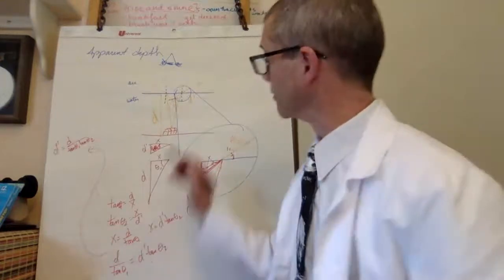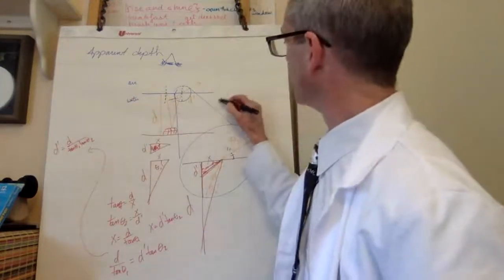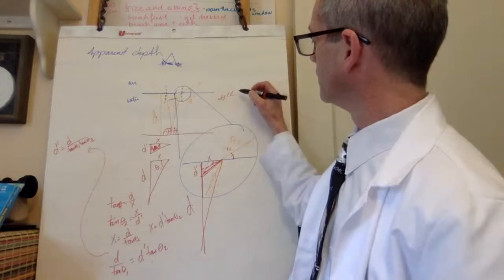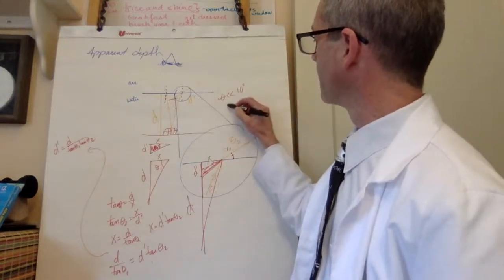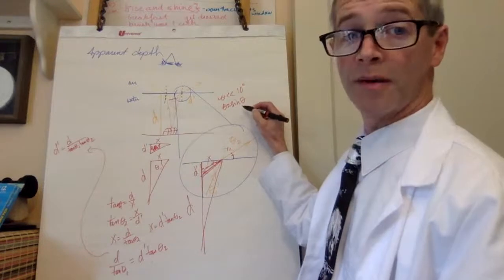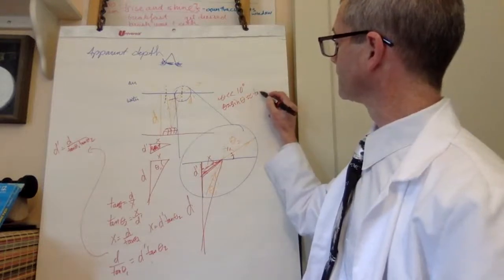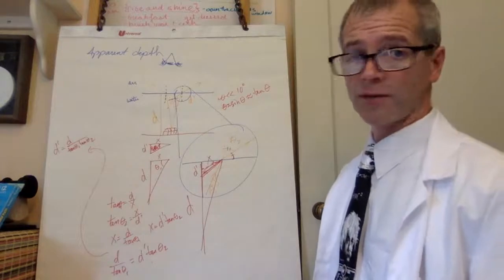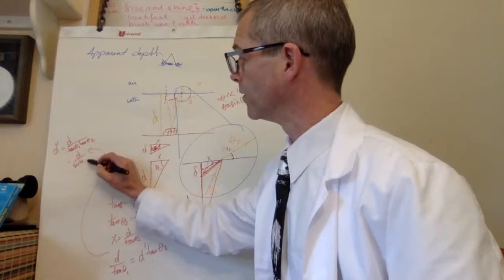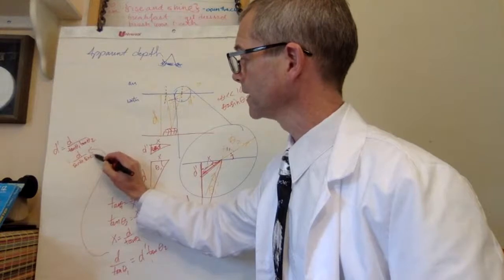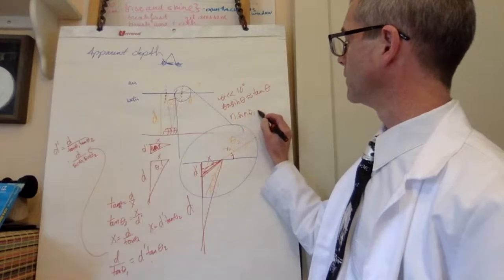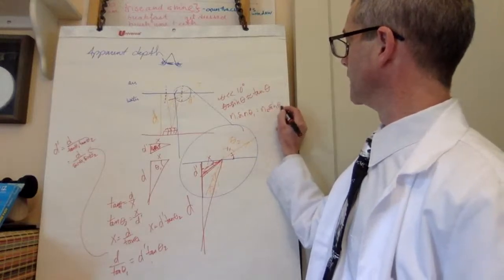Now you have to use the small angle approximation, where if theta is much much smaller than about 10 degrees, sine theta equals tan theta. So now I can plug that in, and I end up with D prime equals D times sine theta one over sine theta two. And I know from Snell's law that N1 sine theta one equals N2 sine theta two.